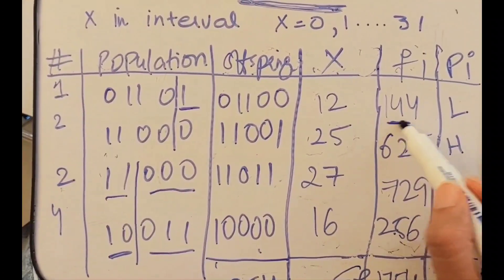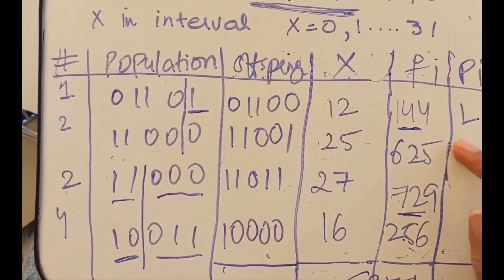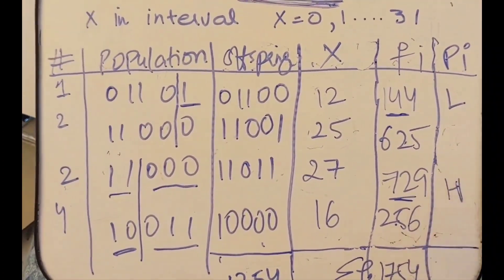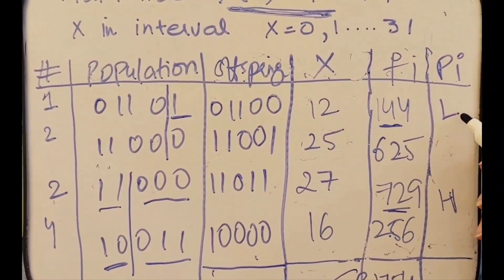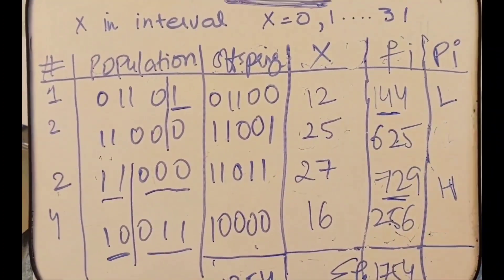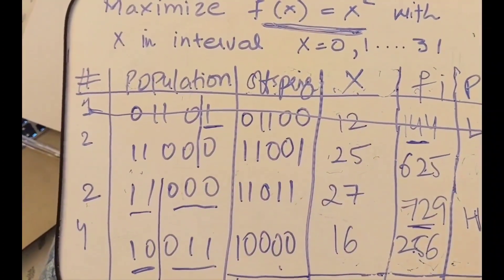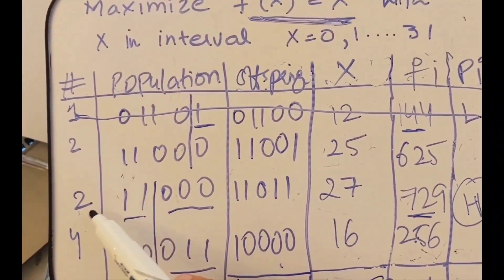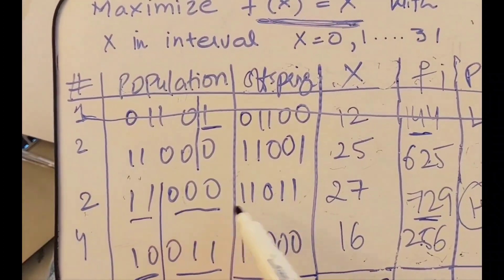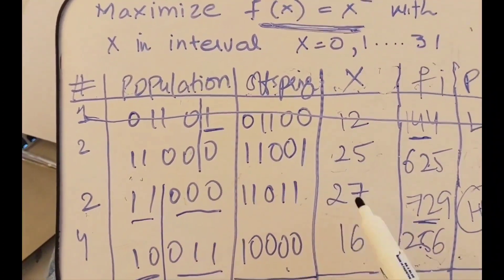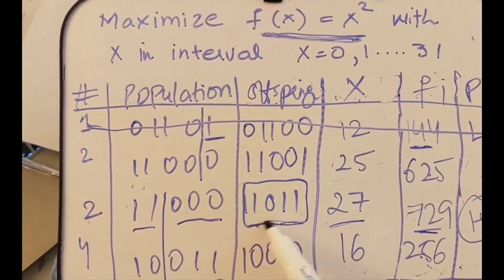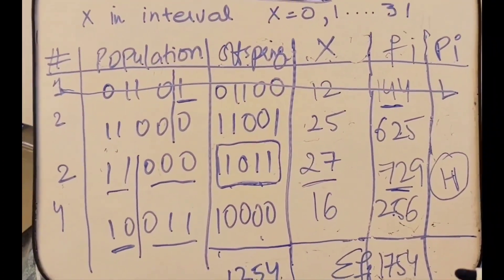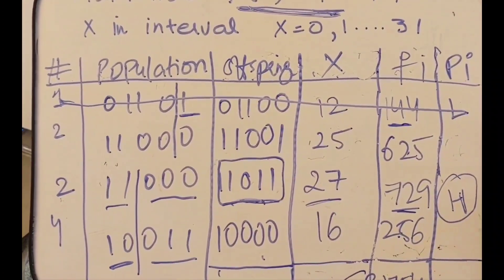Looking at the new probabilities, the smallest fitness value gets the lowest probability and the largest gets the highest. When generating the next population, I discard the string with the lowest probability and repeat the string with the highest probability twice. This gives us a new, improved population from which we can apply crossover or mutation again.